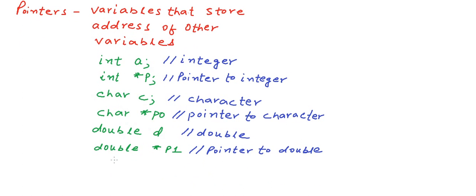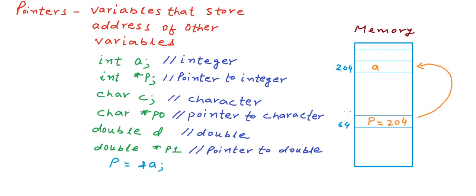To get the address of a variable, we write a statement like p is equal to ampersand a. This ampersand works as an operator that gives us the address of a. What happens in memory is that variable p stores the address of variable a. In this figure, p's value is 204 which is the address of a, so p points to a. Using p, we can also get the value of a — if a is 8 and we use the star operator in front of p, then star p gives us 8. If we try to print star p, it gives us 8.